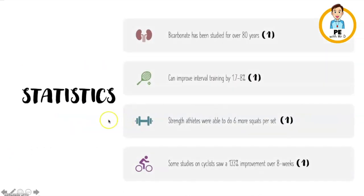Here's a couple of statistics to get us started. Bicarbonate has been around for over 80 years and studied thoroughly during that time. Many studies have found that it improved performance. More specifically, one study found it can improve interval training by 1.7 to 8% depending on the person. Another study found strength athletes were able to do six more squats per set than those without Bicarbonate Soda. Another study focusing on cyclists saw a huge 133% improvement over eight weeks. Let's find out how they did it.